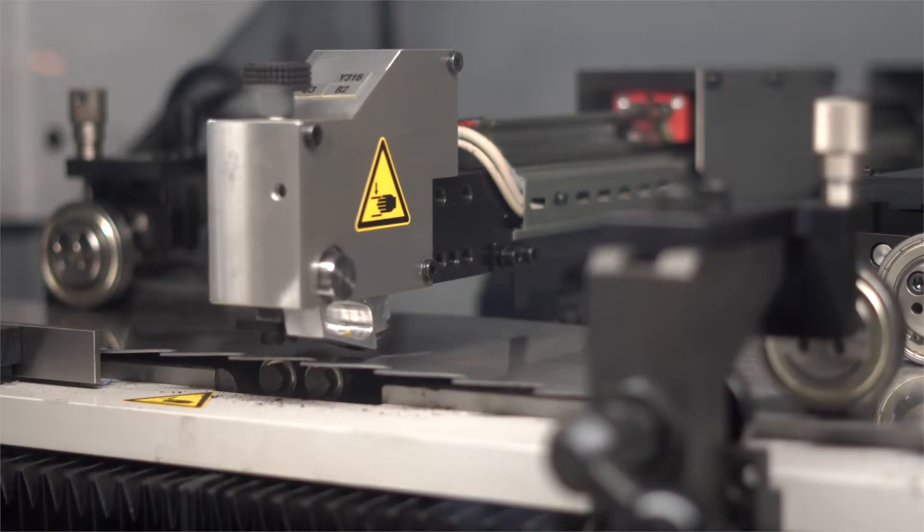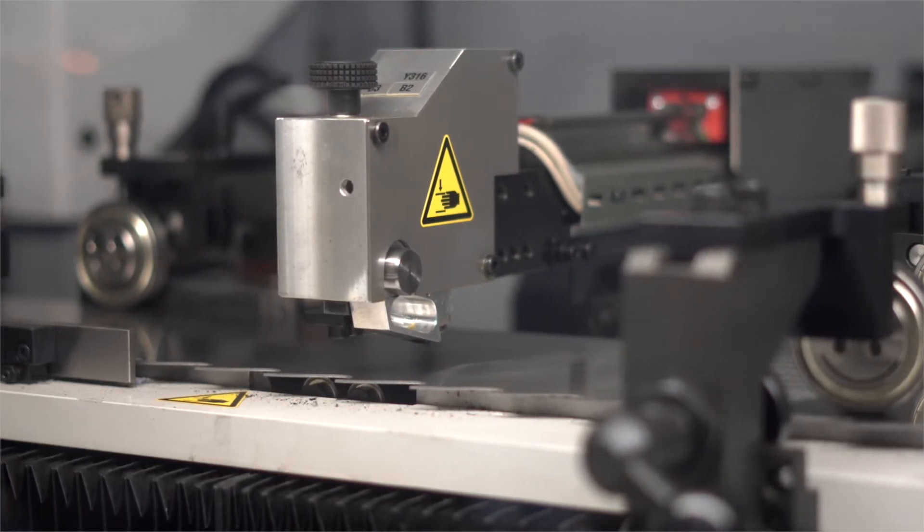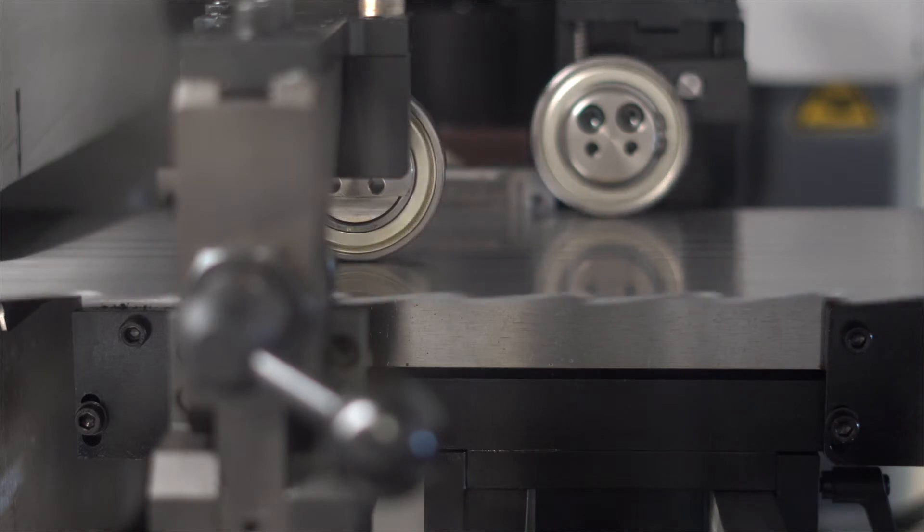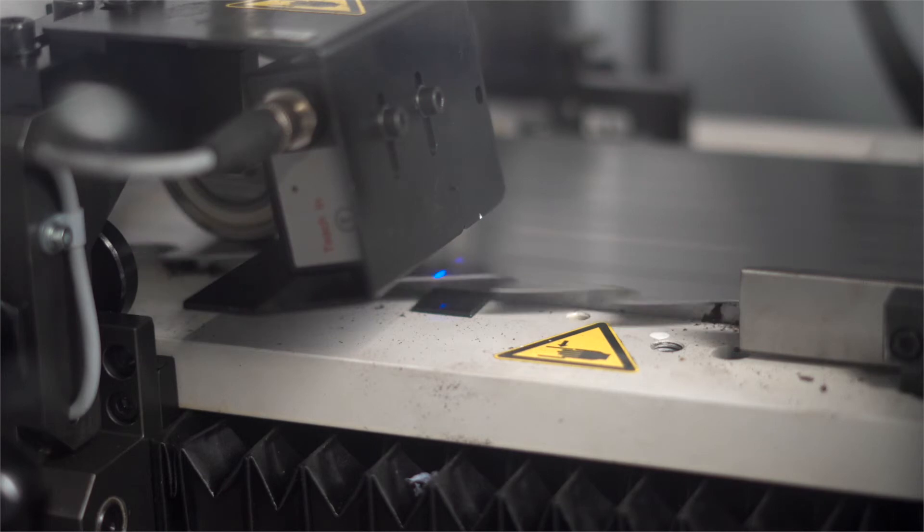A probe then performs a measurement of any deviations from the target over the entire width of the band. Controlled rollers level out any bumps from above and below until the blade is flat and levelled.